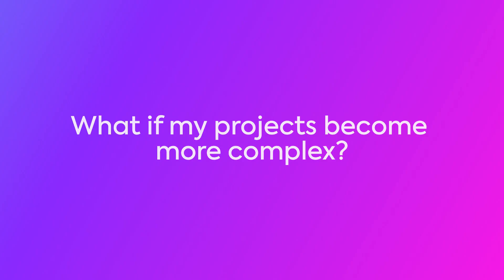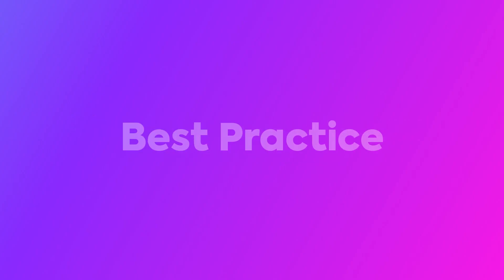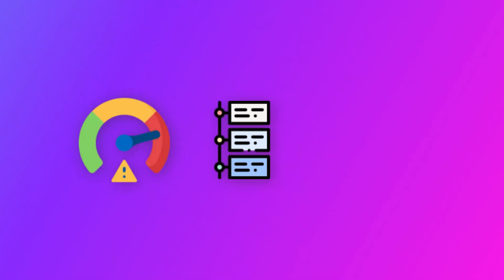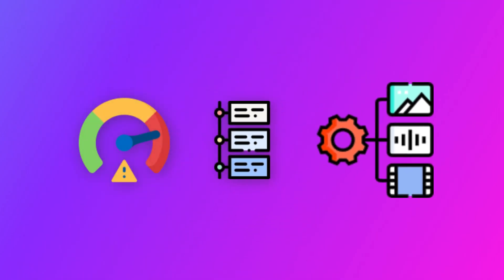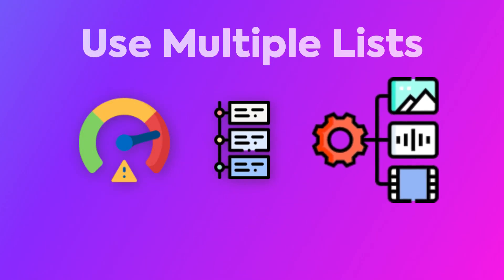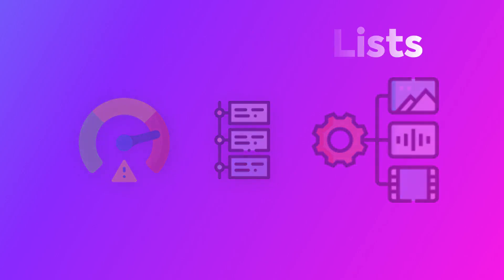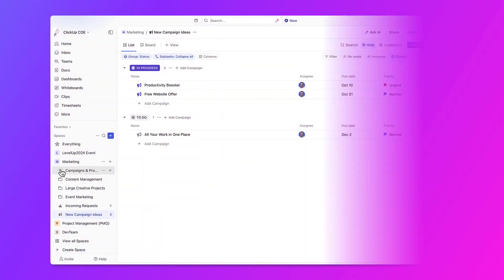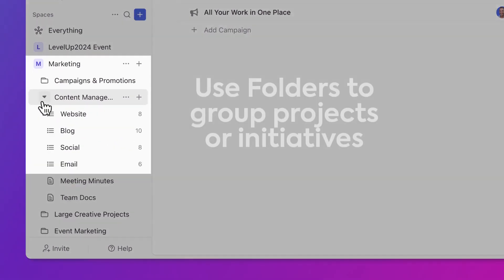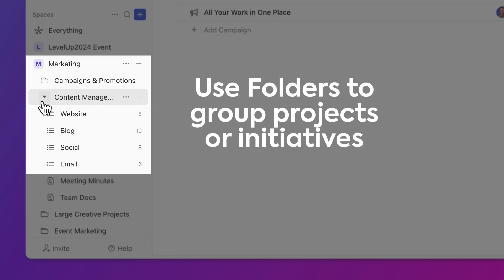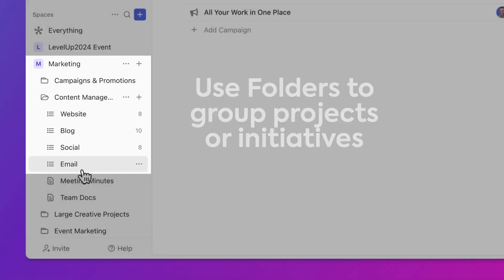As a best practice, if your projects require you to track multiple aspects of a project — like risks, phases, or assets — you may use multiple lists. In which case, you may want to use folders to group these more complex projects or initiatives together.